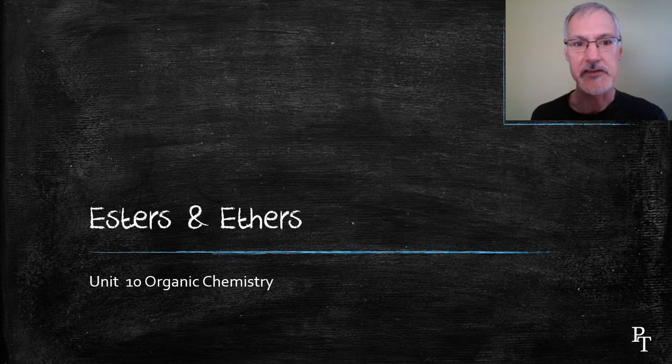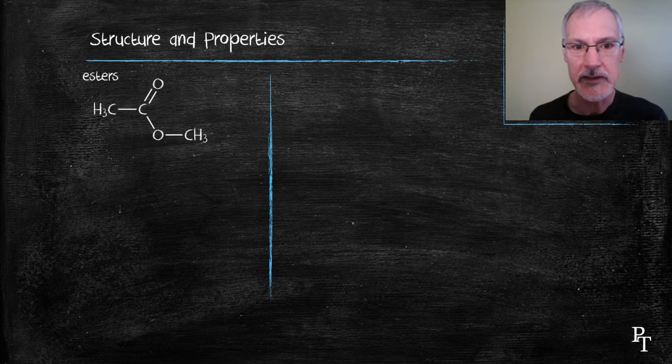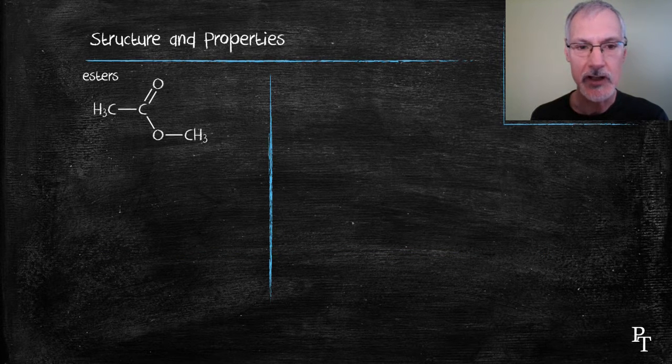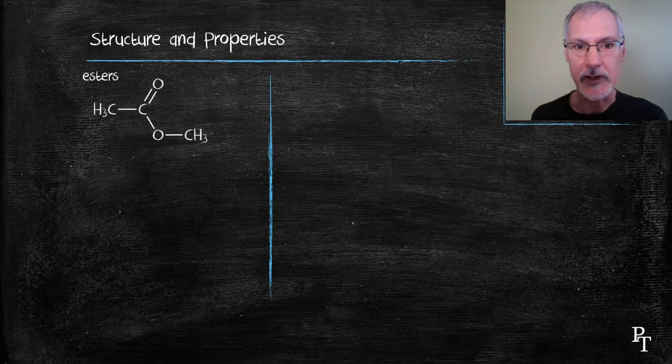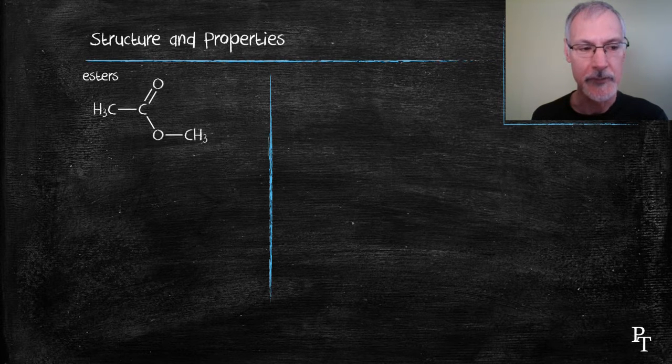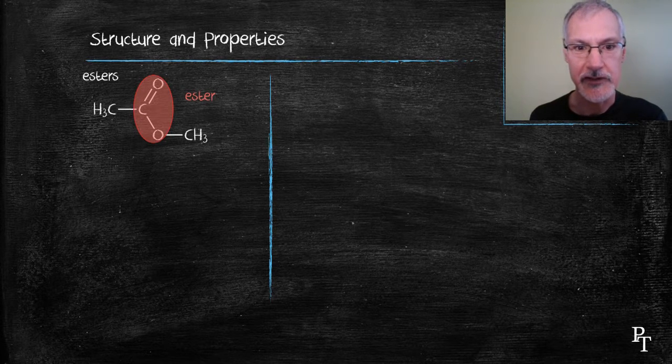Let's begin by taking a look at the esters. Esters can be recognized by a carbon doubly bonded to an oxygen and that same carbon singly bonded to a single oxygen. This interrupts the carbon chain that is formed. We can recognize that functional group and it's called the ester functional group.